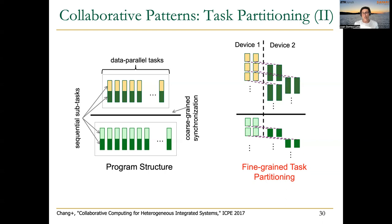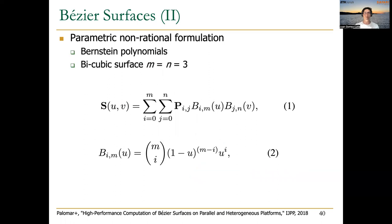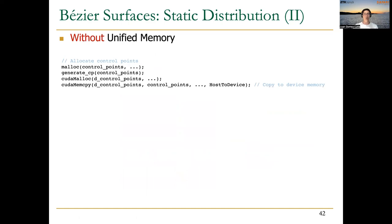Let's see some examples. For data partitioning, we use Bezier surface as an example — an algorithm that generates a surface in three-dimensional space using a net of control points. We use a four-by-four net of control points to generate a surface, computed using a parametric non-rational formulation based on Bernstein polynomials. The surface is partitioned into tiles assigned to different processors — CPU or GPU. With a static distribution, we profile devices in advance to know how fast they compute tiles, and based on that do a static partitioning. This can be implemented even without unified memory.